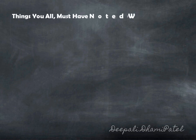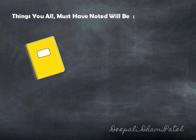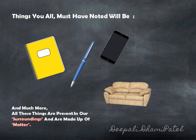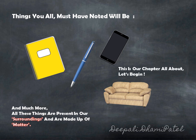Now let us guess what you all must have written. It could be a book, pen, mobile phone, sofa set and much more. Did you see — so many things are around you when you are inside the house, outside the house, wherever you go. And all these things present in our surrounding make up our surrounding, and this surrounding material is made up of matter. So this is what our chapter is all about — let's begin.